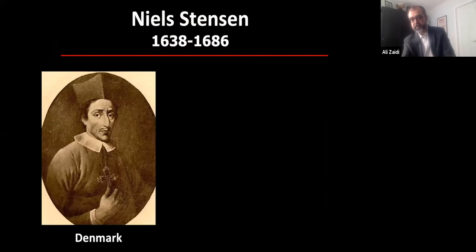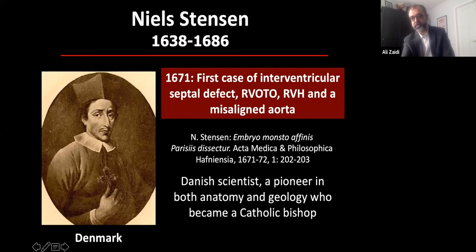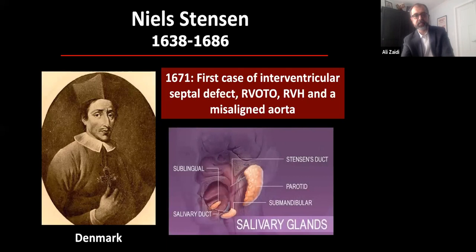In the 1600s, Neil Stenson in Denmark published the first case in 1671: an interventricular septal defect — now called a ventricular septal defect — RV outflow tract obstruction, and a misaligned aorta. This is what is now called tetralogy of Fallot. What's fascinating is that Stenson is better known for the Stenson's duct in the oral cavity, yet he published this landmark congenital case.